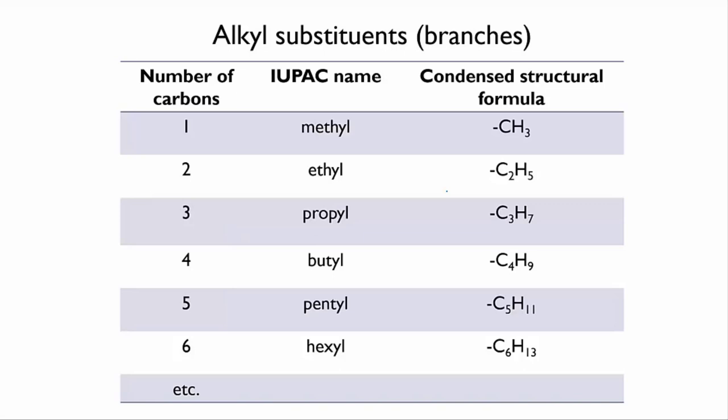But the parent part of the name follows exactly the same pattern according to the number of carbons involved. So, a branch that's one carbon long is methyl and a branch that's two carbons long is ethyl and so on. I'll draw a couple of these out to make it clearer.